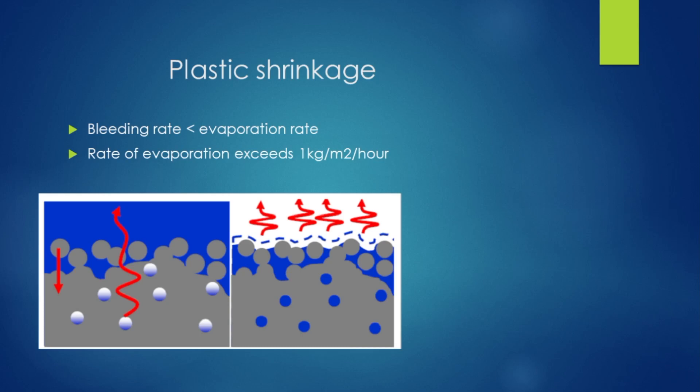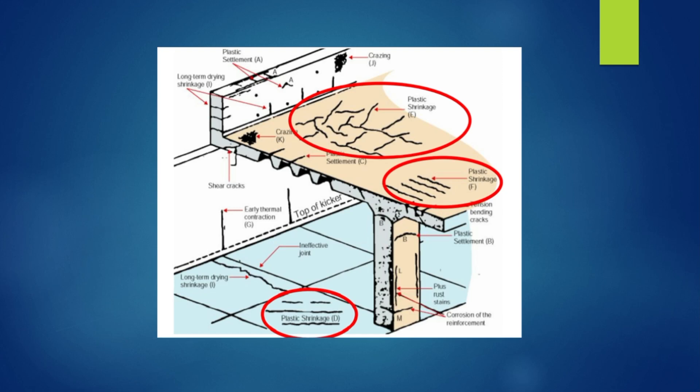Plastic shrinkage will start a few minutes into the shrinkage process. In the plastic phase, when the top finishing surface is done, there is bleeding. If the atmospheric temperature is high, the surface water will evaporate. If the evaporation rate exceeds the bleeding rate, the initial water is not sufficient, and shrinkage will start, resulting in plastic shrinkage cracks.